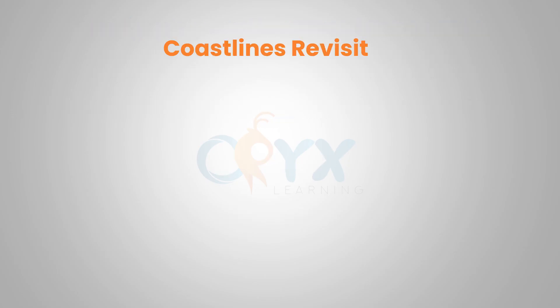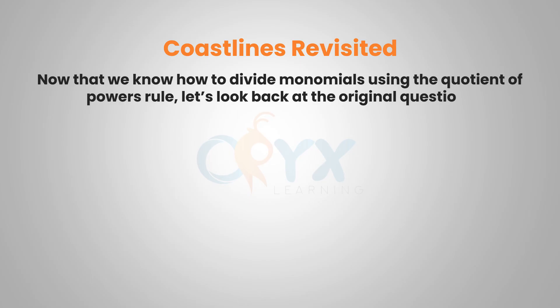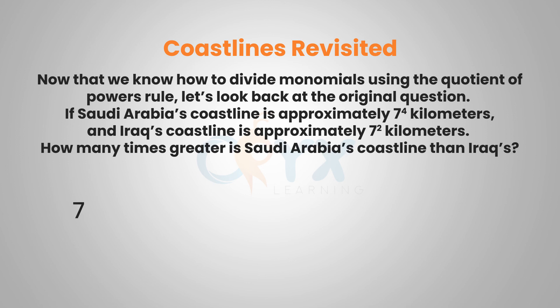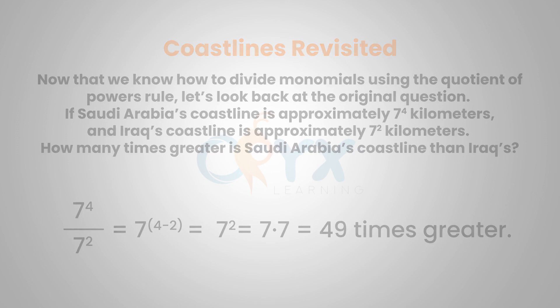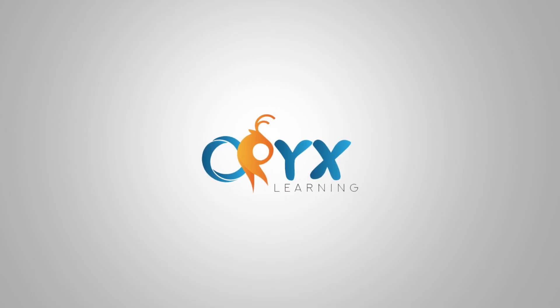Let's go back to the coastlines problem from the beginning. Using the quotient of powers rule: Saudi Arabia's coastline is 7 to the 4th kilometers and Iraq's coastline is 7 to the 2nd kilometers. Just like the ant problem, we take 7 to the 4th divided by 7 squared, subtract the exponents: 4 minus 2 is 2. And 7 squared, 7 times 7, is 49. So Saudi Arabia's coastline is approximately 49 times greater than Iraq's coastline. That has been our lesson on Unit 1, Lesson 3: Multiplying and Dividing Monomials.